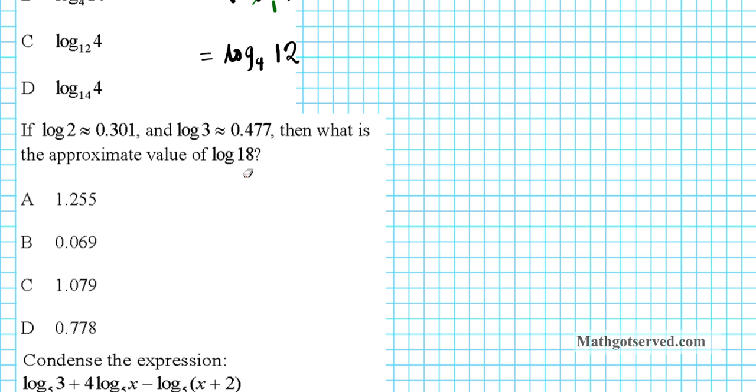So the question here is can I express 18 using 2 and 3? So if we think about it, we can express 18 as 18 can be written as 2 times 3 which is 6 times 3. So now we're going to write log 18 is equal to log of 2 times 3 times 3.